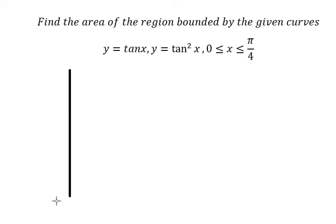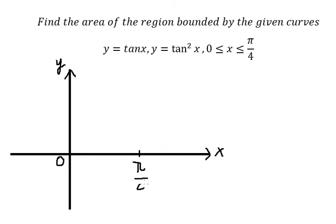First, we need to write the function. We have tan x and tan²x. The values of tan x and tan²x in this area are from 0 to 1.